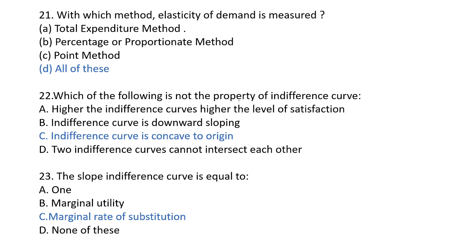Next question: which of the following is not a property of an indifference curve? First: higher indifference curve means higher level of satisfaction — this is a property. Second: indifference curve is sloping downward — this is also correct. Third: indifference curve is concave to the origin — this is not correct, because the indifference curve is actually convex to the origin, not concave. So this is the right answer, as it is not a property. The answer will be C.